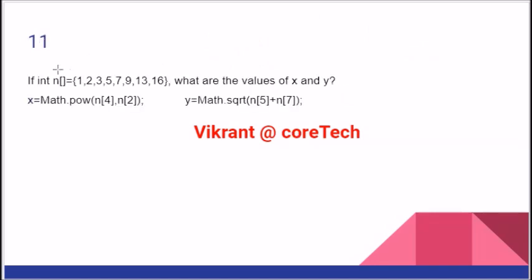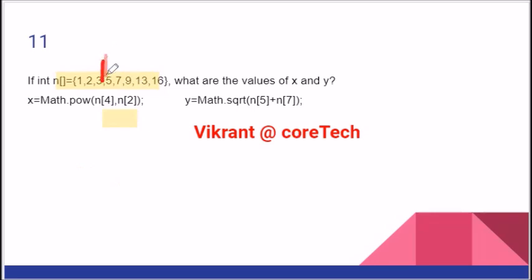Now we have an array named N with some values. Do some calculations — if I am supposed to find array[4], counting indices 0, 1, 2, 3, 4, that is 7. And index 2 is 3. So the answer should be 7 to the power of 3. And this involves Math.sqrt. Array at index 5 is 9 and at index 7 is 16.